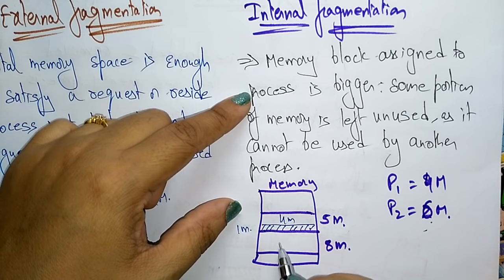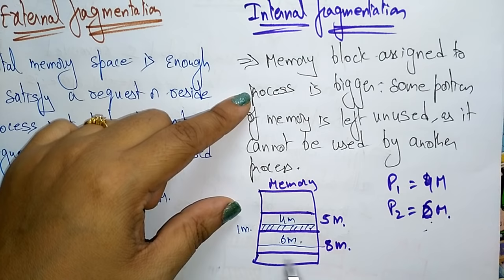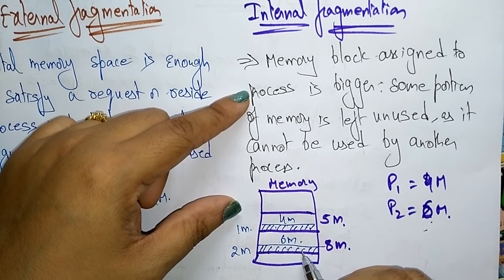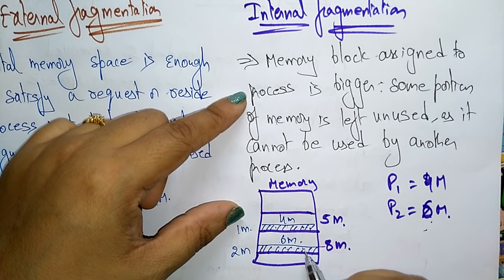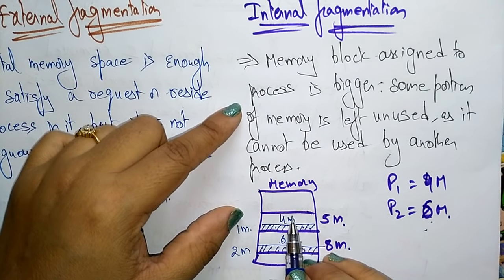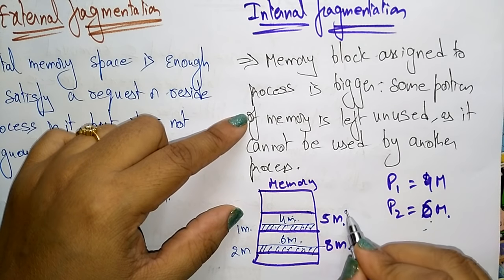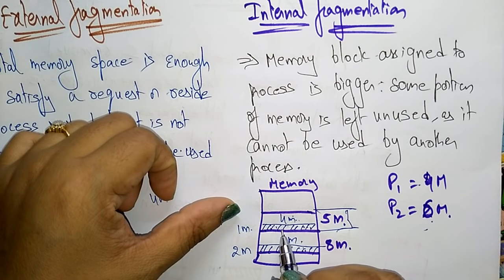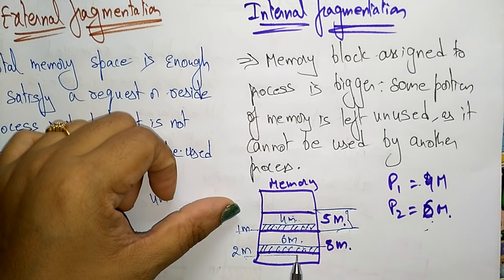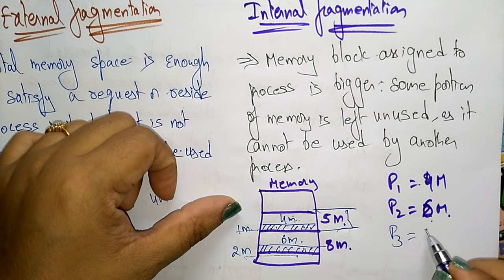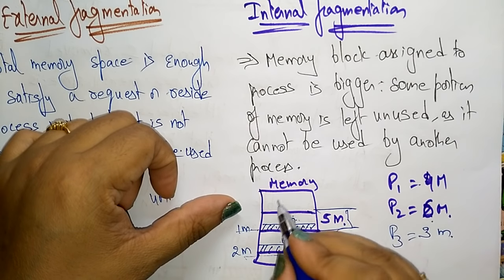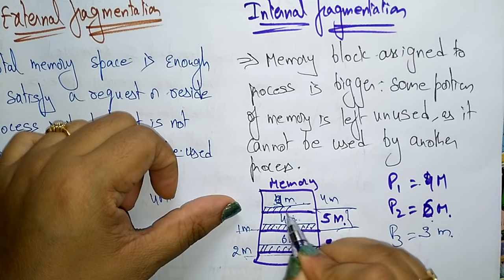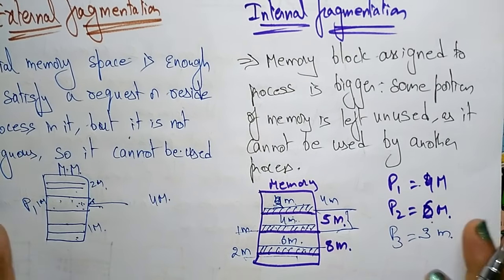We are assigning a partition that is bigger — some portion of memory is left unused as it cannot be used by another process. For example, we store 4 MB but 1 MB becomes waste. This 1 MB cannot be used for the next process because if the next process is 6 MB, it cannot fit into 1 MB. Again, 2 MB is wasted here. This wastage of space inside the main memory you call internal fragmentation. The assigned block is bigger than the process we are sending, so some portion of memory is left unused and cannot be used by another process.